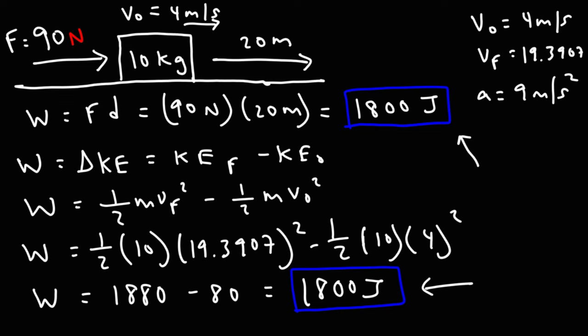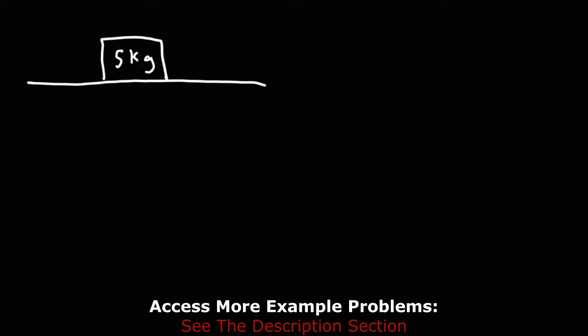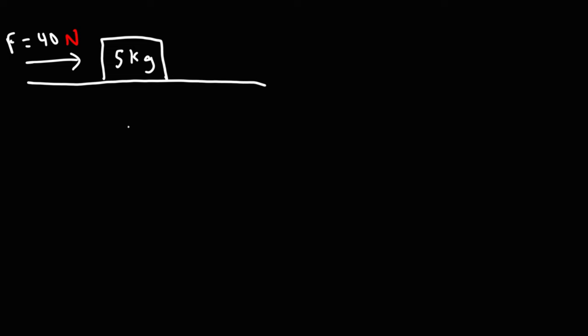That's how you can calculate the work done by a force — you can multiply force and displacement to get the answer, or you can determine the answer by calculating the change in kinetic energy. Now let's work on a similar problem. This time we're going to have a 5 kilogram mass on a horizontal frictionless floor, and we're going to apply a force of 40 newtons. Initially, this block will be at rest, and we're going to apply this force for a time period of 8 seconds. What is the work done by this force?